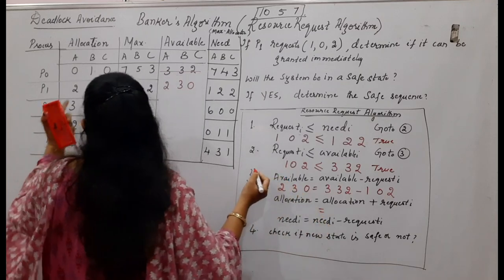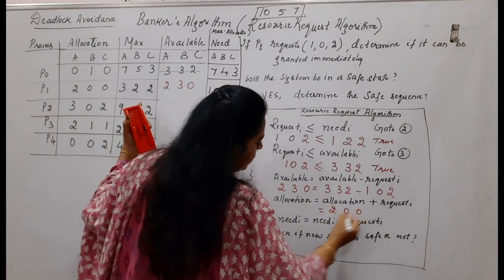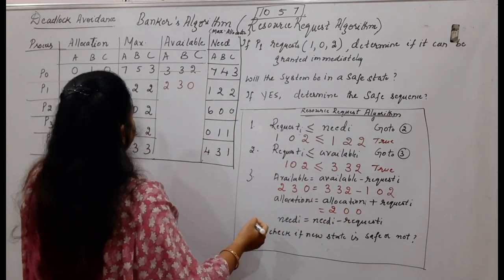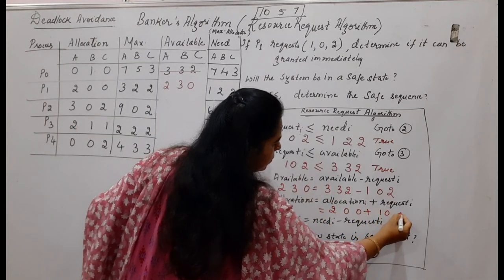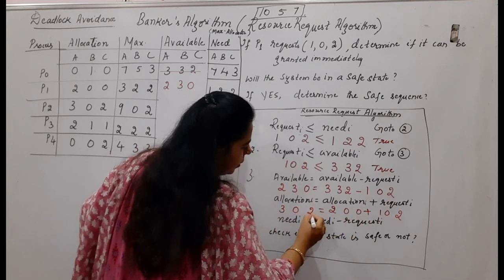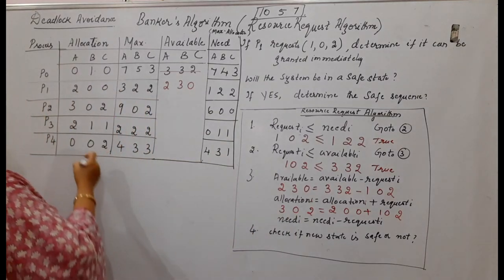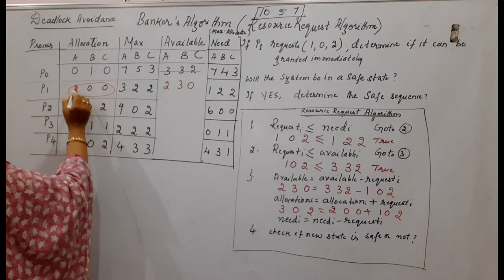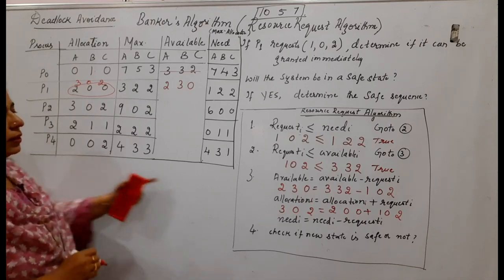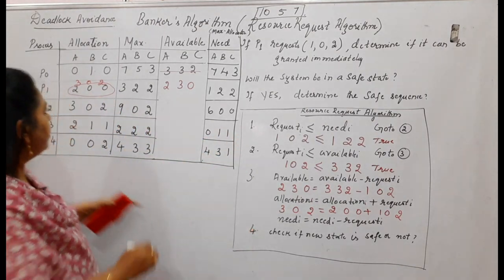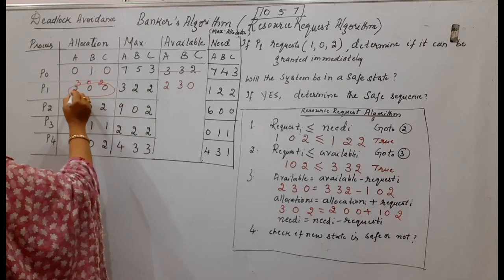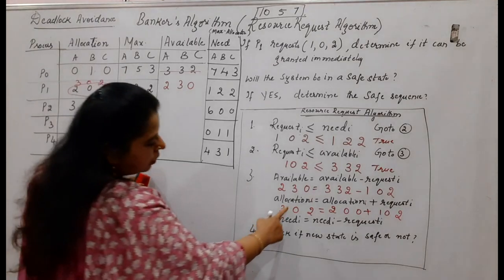The system also updates the allocation for P1. P1 was holding 2,0,0 and the request is 1,0,2, so: 2+1=3, 0+0=0, 0+2=2. The new allocation for P1 becomes 3,0,2. Please note this carefully — most students forget to update the allocation matrix. The new allocation value 3,0,2 will be used when applying the safety algorithm.